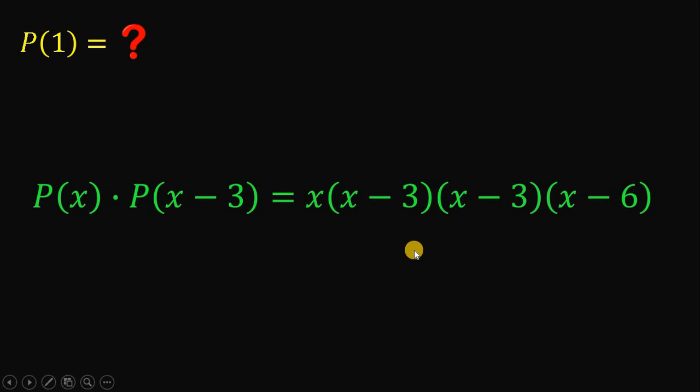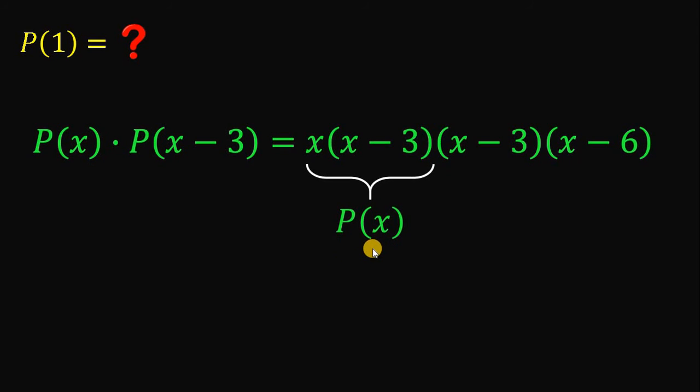And now what if this x times x minus 3 is the P(x)? Just what if? Now let's see. If this is P(x), let's focus on this part. If this is P(x), so we have P(x) equals x multiplied by x minus 3.